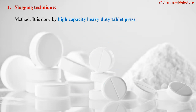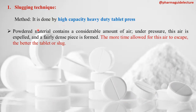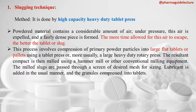The first technique is slugging. Slugs are prepared in a high capacity, heavy duty tablet press. A powdered material contains considerable air; under pressure, this air is expelled and a dense piece called a slug is formed. The more time allowed for the air to escape, the better the slug formed.